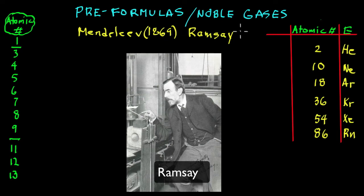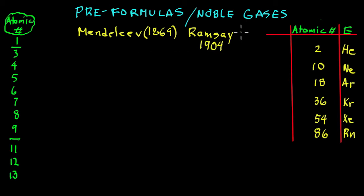Ramsey was in the age where the Nobel Prizes could be won. In about 1904 he won the Nobel Prize.